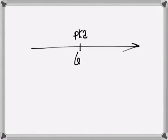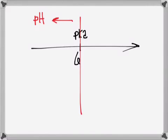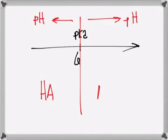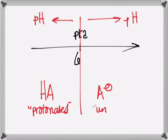Draw a red line — or any line — straight down the middle. Any time the pH is on the left of the red line, you're going to be in the HA form. Any time the pH is on the right of the red line, you're going to be in the A minus form. HA means it's protonated — the protonated form — and A minus means the unprotonated form.